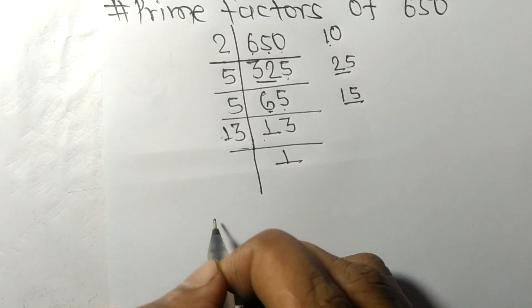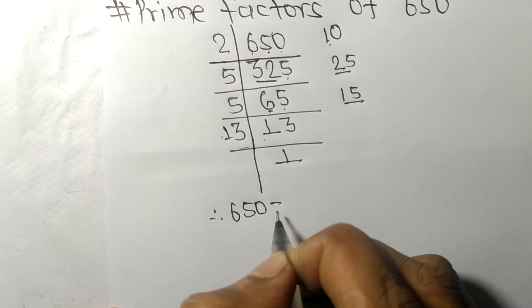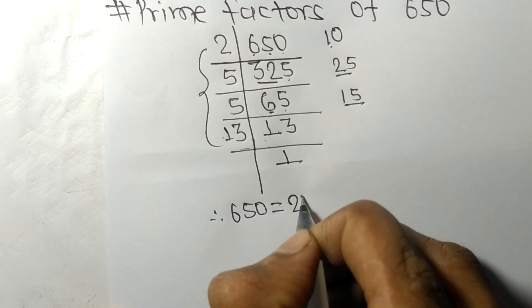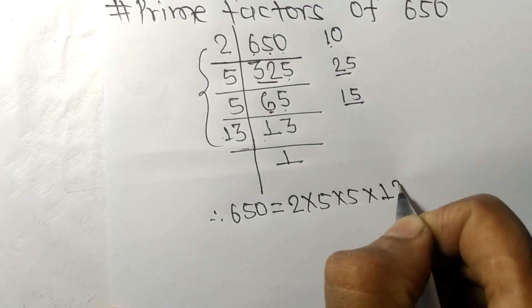Therefore, 650 equals 2 times 5 times 5 times 13 times 1.